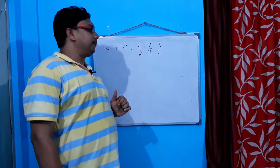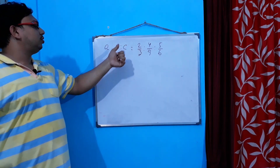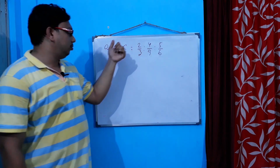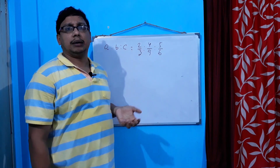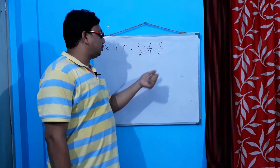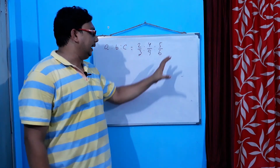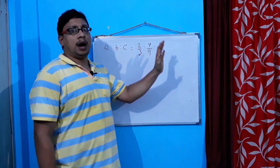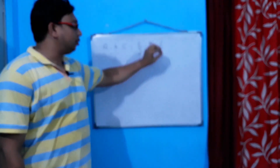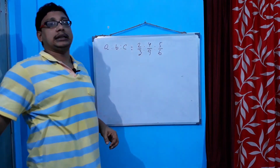So, how did you say that a is to b is to c is equal to 2 by 3, 4 by 9, 5 by 6? As we saw that, we had a problem — we had all of those things and we had to convert the whole thing.